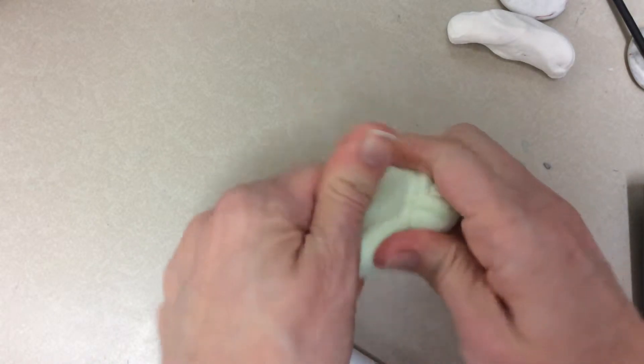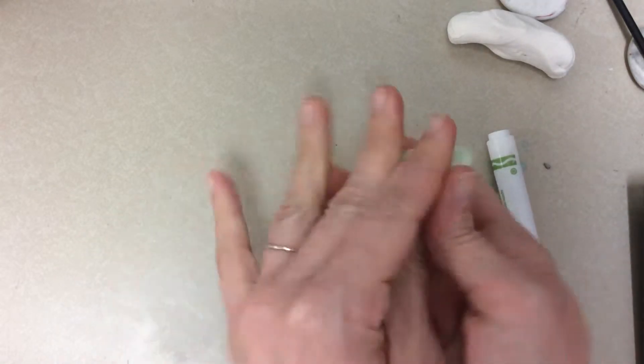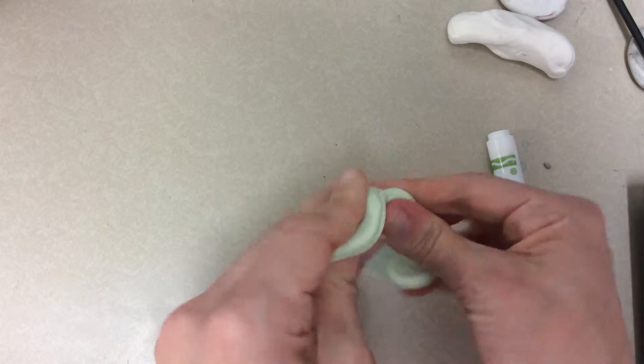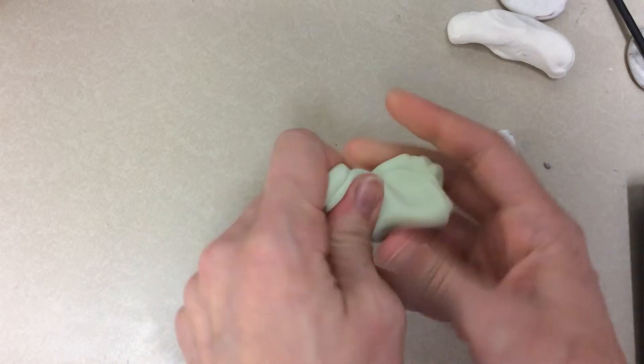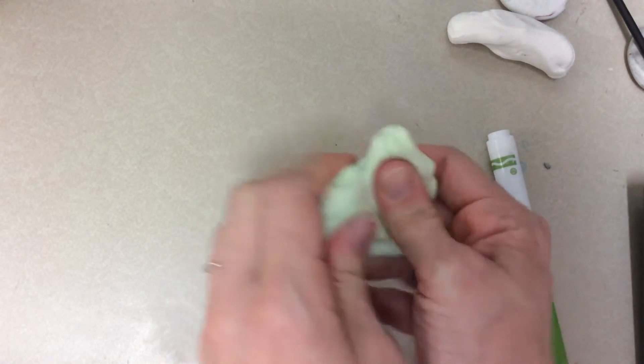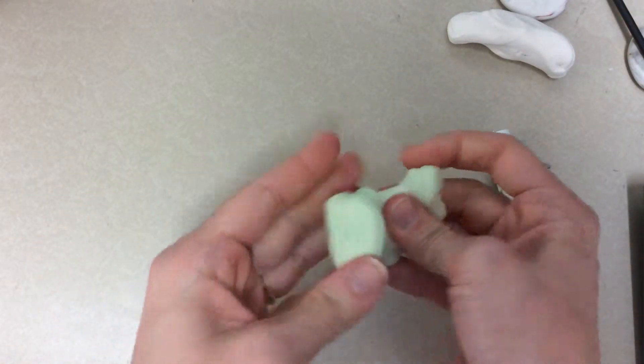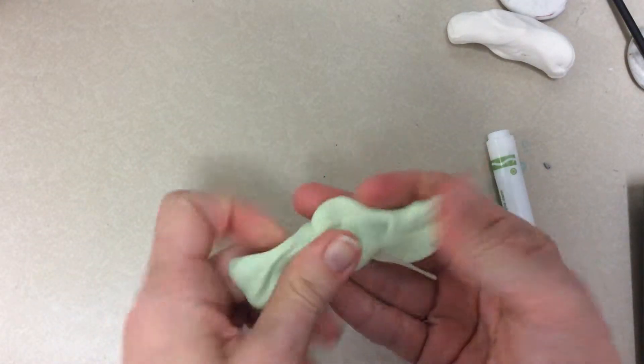Then after you have the color the way you want, we're going to talk about making the body. And the way you do that is with a coil. You might remember from last year that a coil is just a long rope or snake of clay.